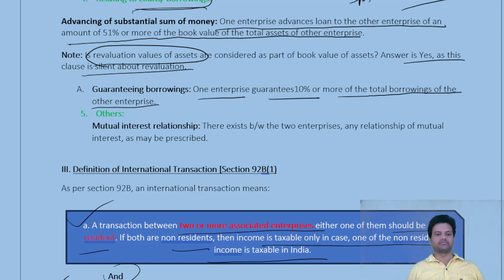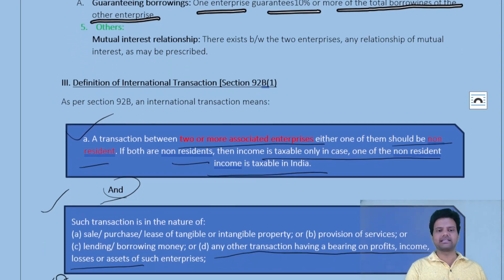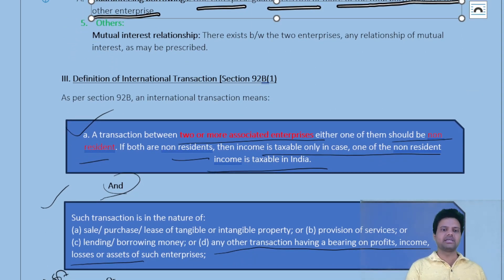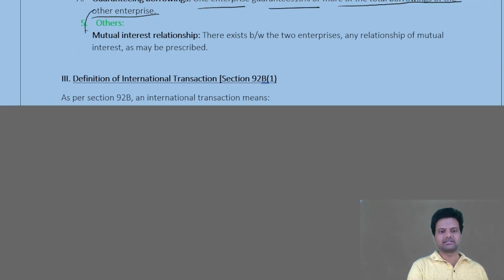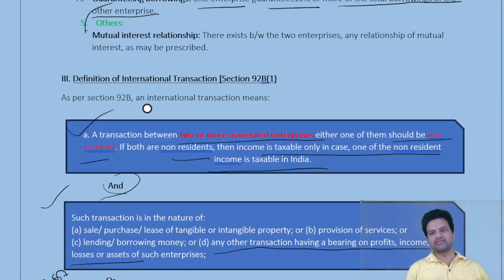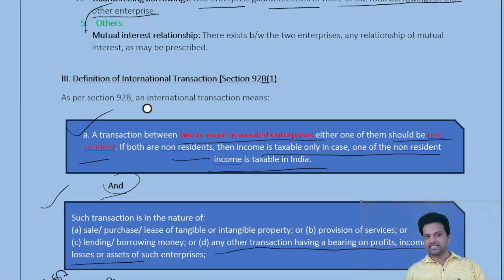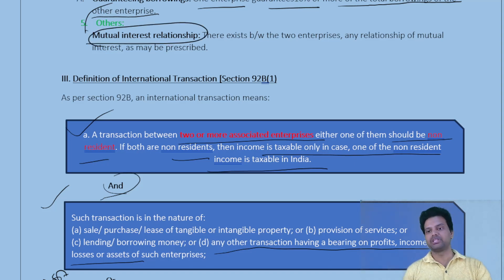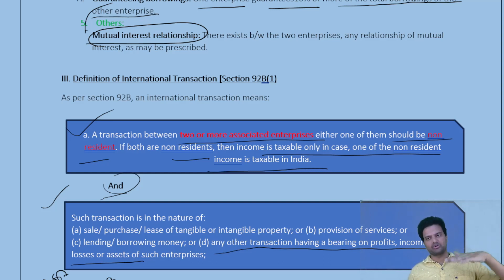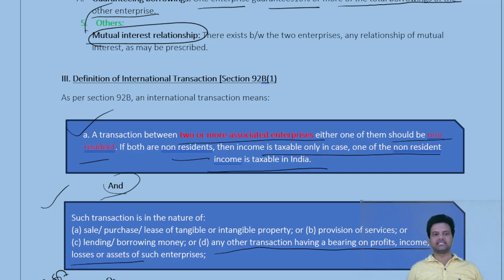There is also a miscellaneous category. If anything is not covered under the above categories but both enterprises still have a mutual interest relationship, then also both are said to be associated enterprises.